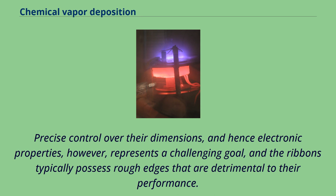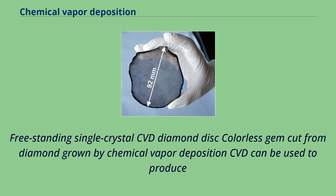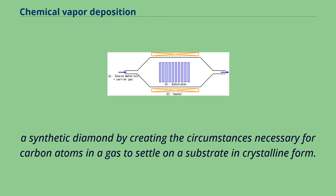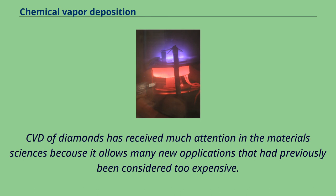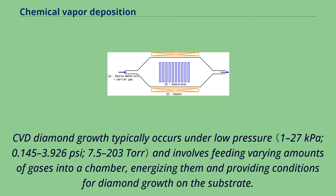CVD can be used to produce a synthetic diamond by creating the circumstances necessary for carbon atoms in a gas to settle on a substrate in crystalline form. CVD of diamonds has received much attention in the materials sciences because it allows many new applications that had previously been considered too expensive. CVD diamond growth typically occurs under low pressure and involves feeding varying amounts of gases into a chamber, energizing them and providing conditions for diamond growth on the substrate. The gases always include a carbon source, and typically include hydrogen as well, though the amounts used vary greatly depending on the type of diamond being grown.